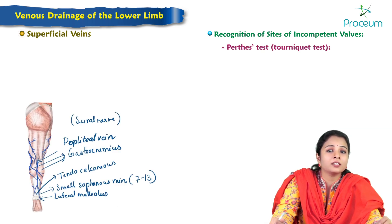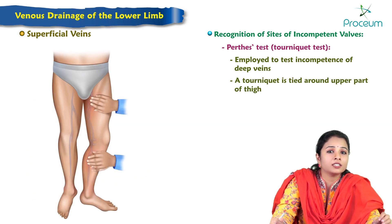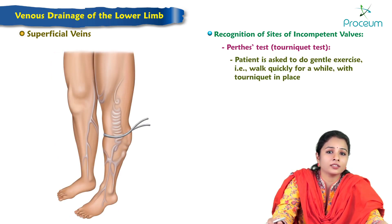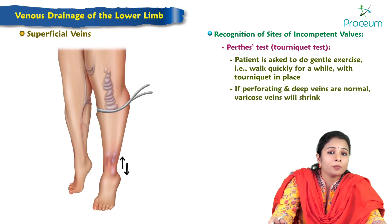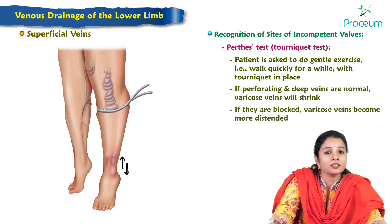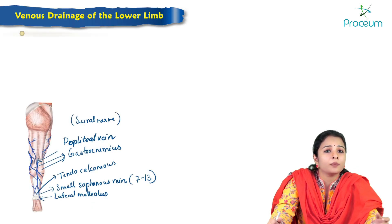If veins are not filled, it is negative for superficial incompetency, and the perforator valves are then tested by maintaining pressure at the saphenofemoral junction for about a minute — gradual filling of superficial veins indicates incompetency of perforating vein valves. Perth's test (tourniquet test) is employed to test incompetence of deep veins: a tourniquet is tied around the upper thigh, tight enough to occlude the saphenous vein but not the femoral vein, and the patient does gentle exercise. If perforating and deep veins are normal, varicose veins shrink; if blocked, they become more distended.